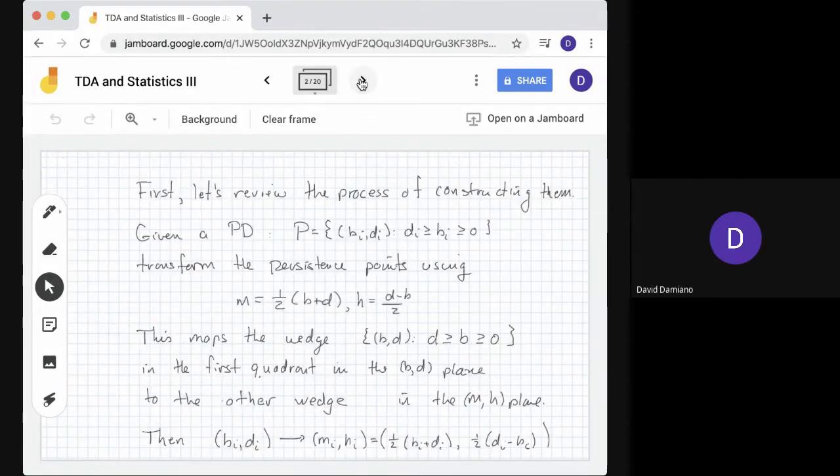First, let's review the process of constructing persistence landscapes. We start with a persistence diagram PD, a collection of points (bi, di) satisfying di ≥ bi ≥ 0. We transform them to the MH plane with (B,D) going to ((B+D)/2, (D-B)/2). The effect of this transformation is to map the wedge D ≥ B ≥ 0 to the first quadrant in the MH plane.